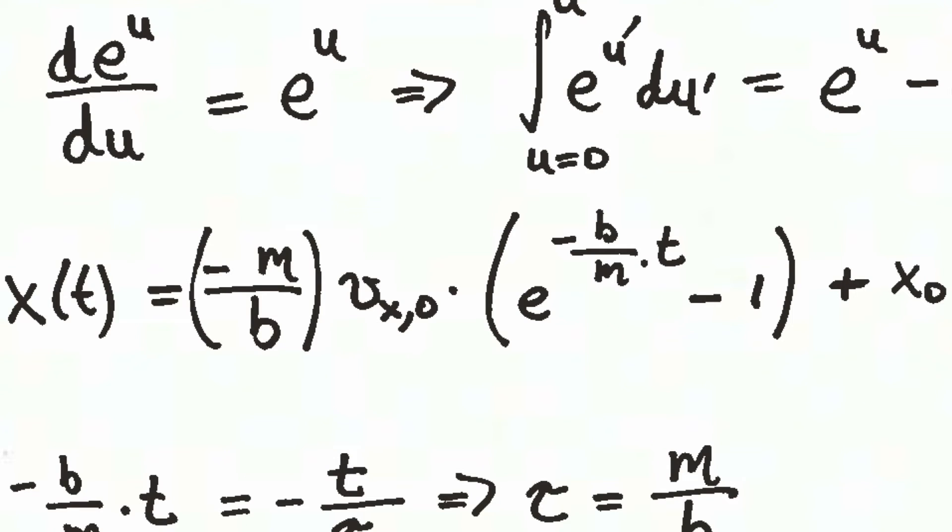And so the solution for x as a function of t is shown in the middle line here. We get a minus m over b at the far left times the initial condition times this argument in the parentheses. An exponential is very similar to what we saw for the velocity, minus 1, and then of course plus the initial displacement, x0.